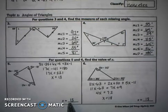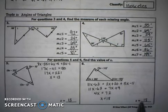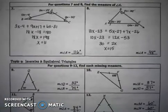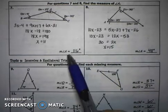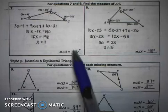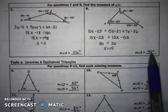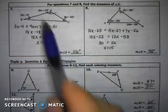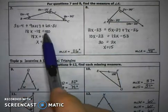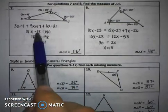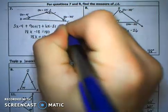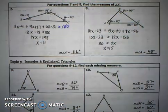For numbers five and six, you're just looking for the value of the variable. We could have plugged it back in, but that's all we're looking for as the answer. For seven and eight, you're looking for the value of the variable, but then they want you to plug that in to find the angle measures. Pay attention to the directions — make sure you're doing what the problems are asking. Remember, all three angles of a triangle add up to 180.